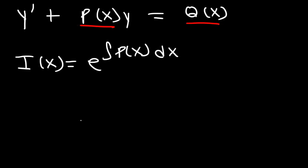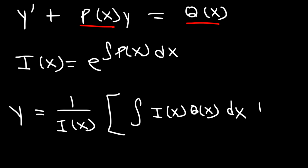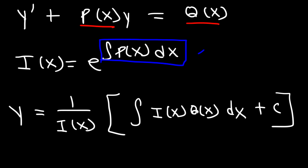Once you have the integrating factor, you can write the general solution to the differential equation. It's going to be 1 divided by the integrating factor times the integral of i of x times q of x dx, plus a constant of integration. Note: when you integrate to get the integrating factor, do not add the constant of integration — only add it at the very end.